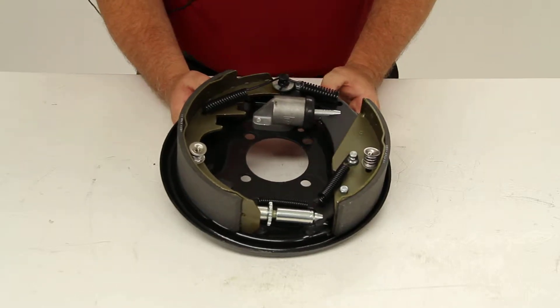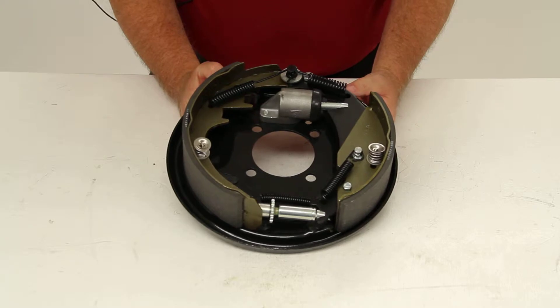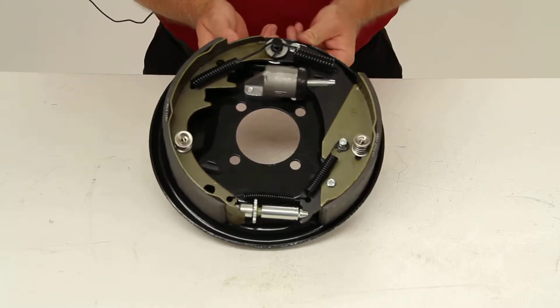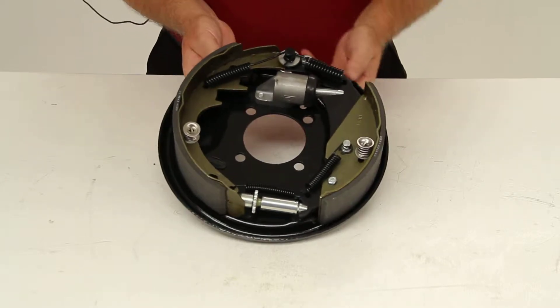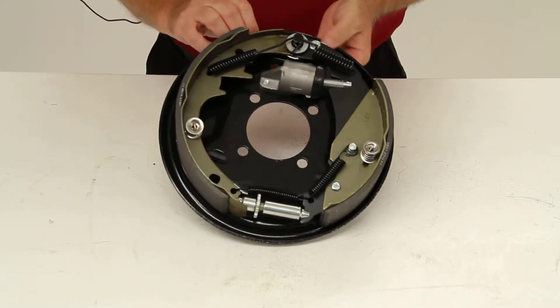Today we're going to review part number T4071500. This is the Titan Free Backing Hydraulic 10-inch Trailer Brake Assembly for the right-hand side, which is the passenger side.